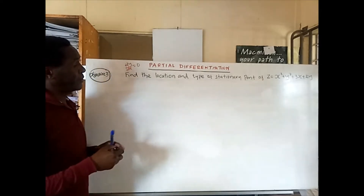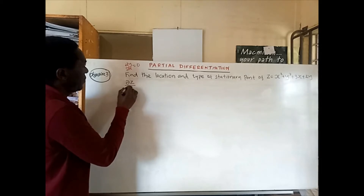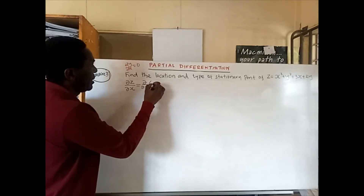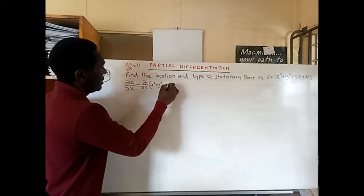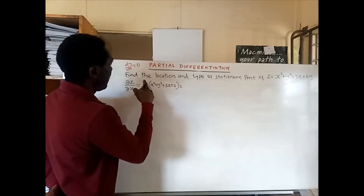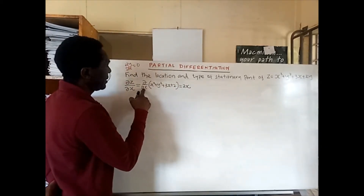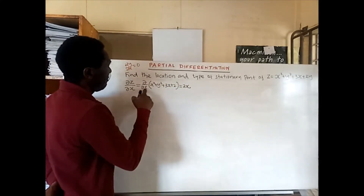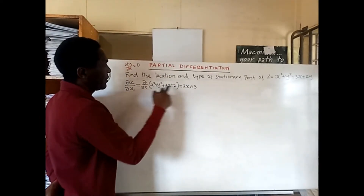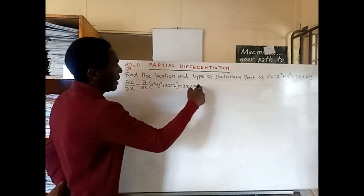To get the location, first we get the partial derivative of z with respect to x. Partially differentiating z equals x squared plus y squared plus 3x plus 2: the partial derivative of x squared is 2x, the partial derivative of y squared with respect to x is 0, the partial derivative of 3x is 3, and the partial derivative of 2 is 0. So partial derivative of z with respect to x gives us 2x plus 3.